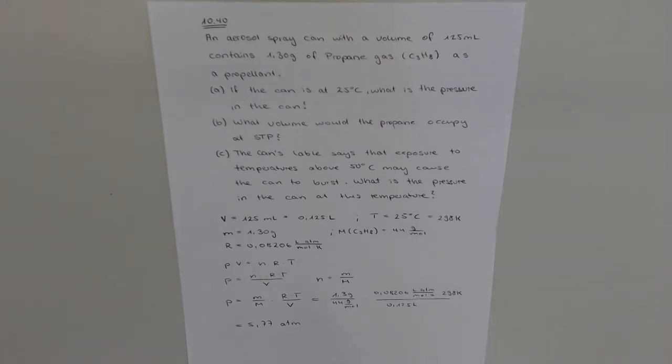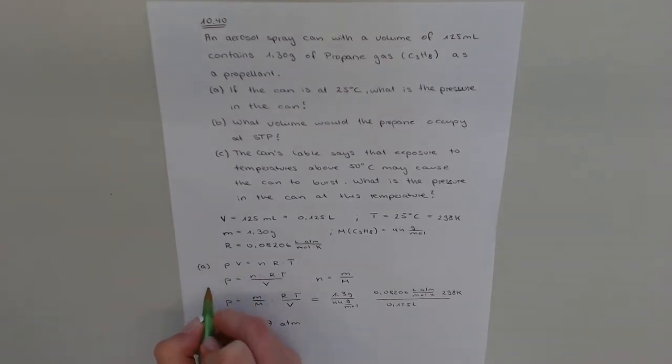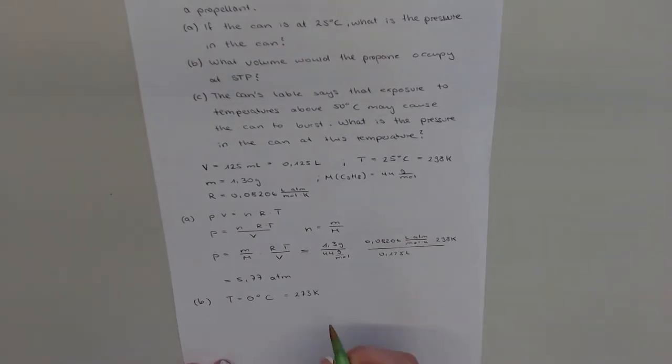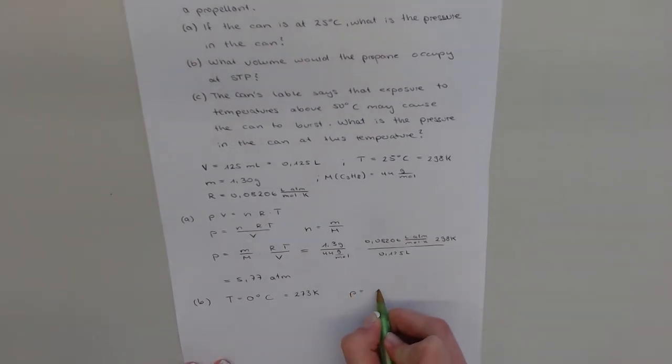For Part B, what volume would the propane occupy at STP? At STP, the temperature is 0 degrees Celsius, which is 273 Kelvin, and the pressure is 1 atm.